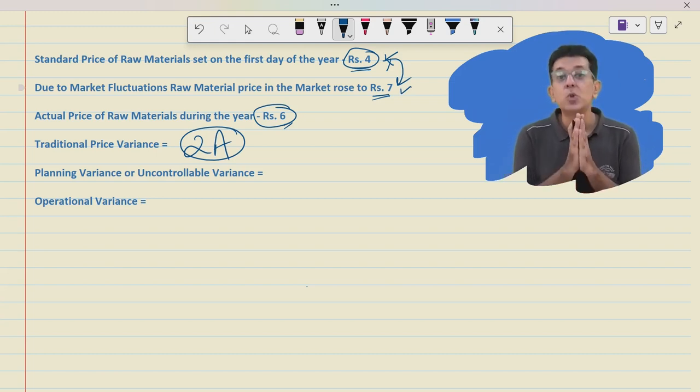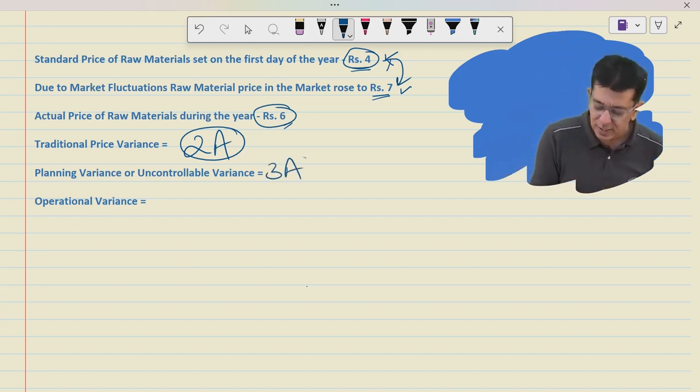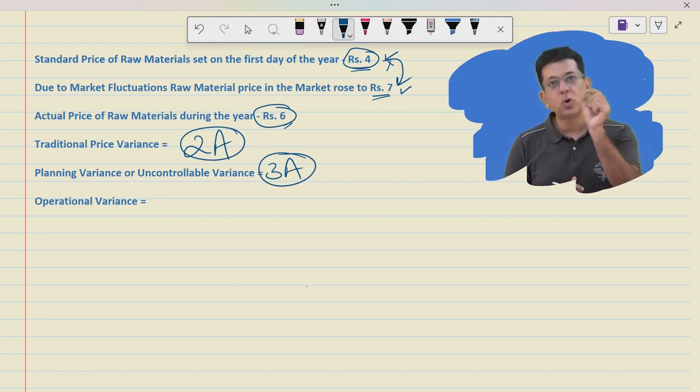Planning variances are not in the hands of the managers. So therefore they should not be held responsible. They should not be charged for this. This part was 3 adverse, that is 4 minus 7.